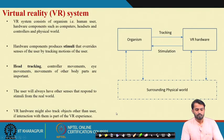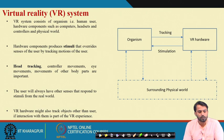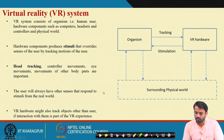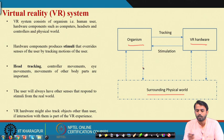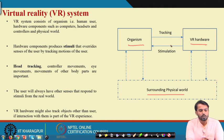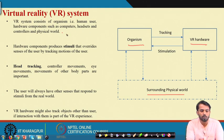What is the virtual reality system composed of? Looking at this diagram, there are three main phases: the organism, the VR hardware, and the surrounding physical world. The organism's movements and activities are tracked with the help of VR hardware, and stimulation is propagated back to the organism through artificial sensory stimulation. The VR system consists of a human user, hardware components such as computers, headsets and controllers, and the physical world.